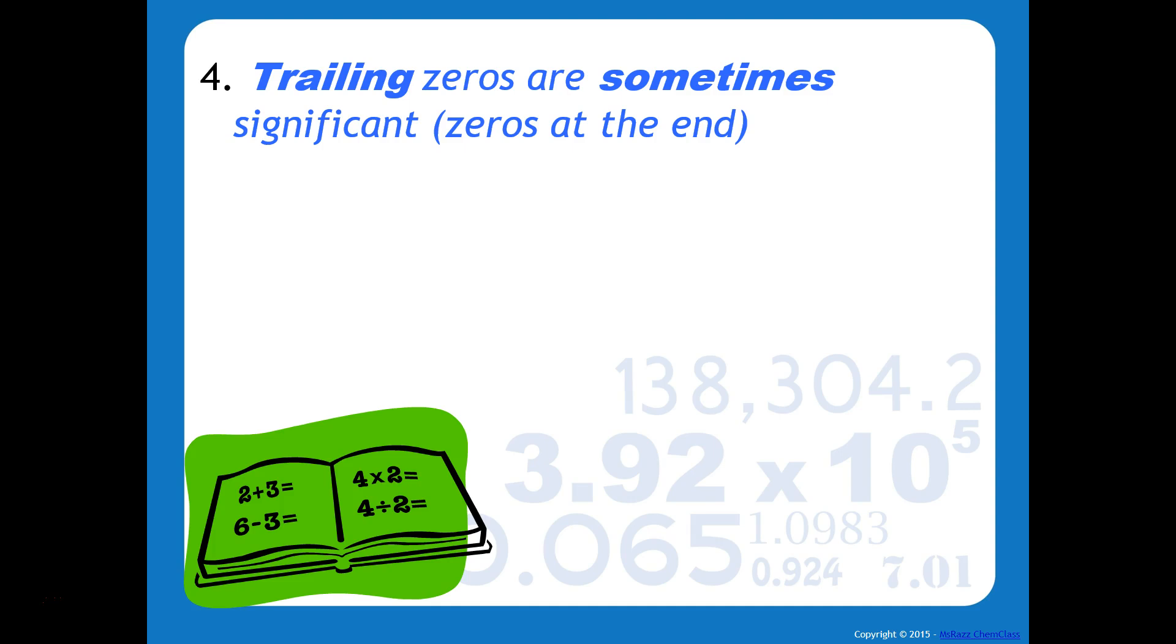The fourth rule is a little tricky for some students, but don't worry, I will have a helpful hint at the end of this presentation. But trailing zeros are sometimes significant. So these are zeros at the end of the nonzero number. For example, they are significant if the number contains a decimal point.